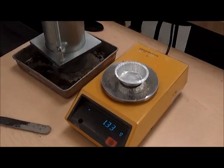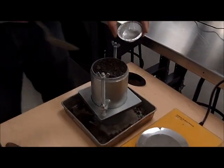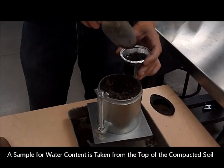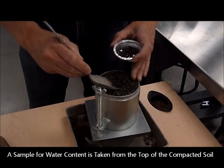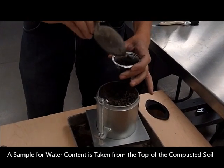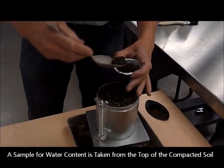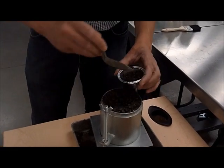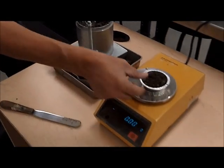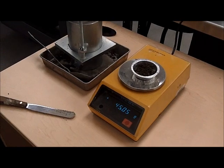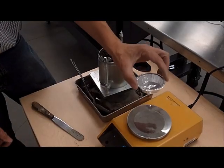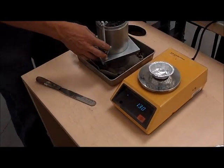We will now take a sample of the wet soil that is representative. And one of those samples will come from the top of the compacted specimen. This will give us the weight of the dish, cup, or container plus the wet soil.